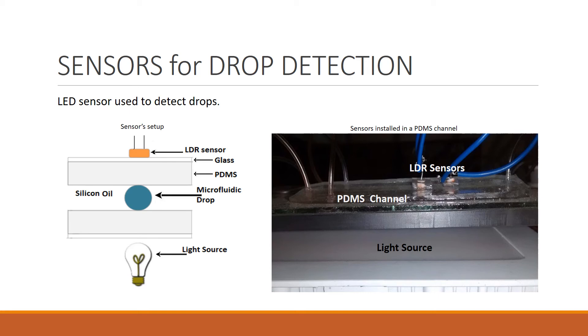Whenever a drop passes under the LDR, there is a change in intensity of light falling on the LDR, because of the difference in absorption, reflection and transmission coefficients of the two fluids used for droplet generation. This intensity change leads to resistance change of the LDR, which is related to the voltage signal of the sensor.